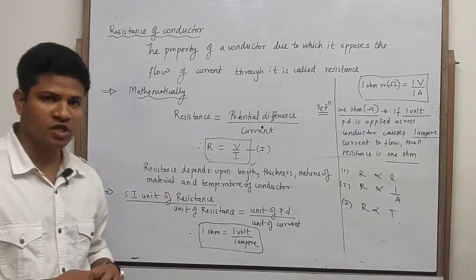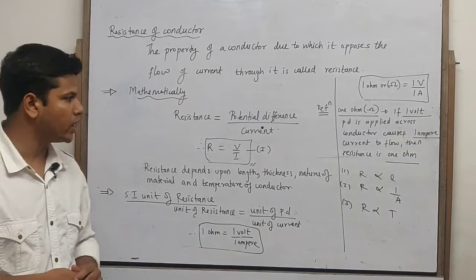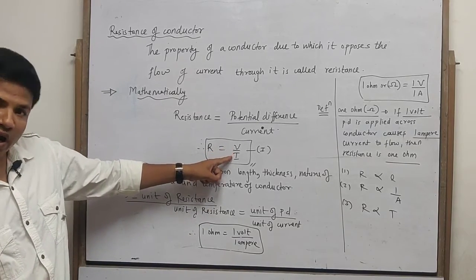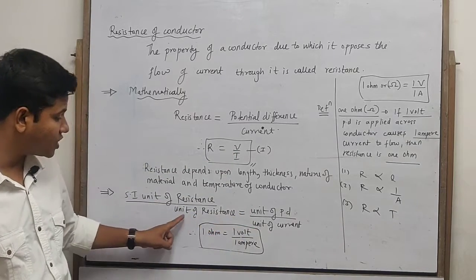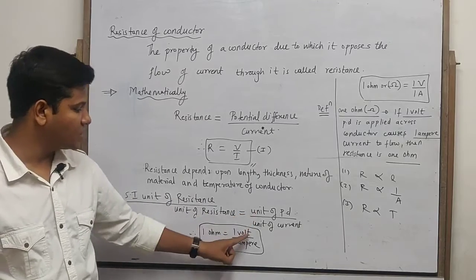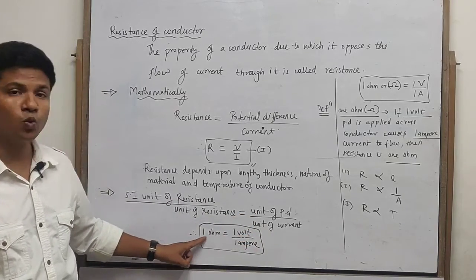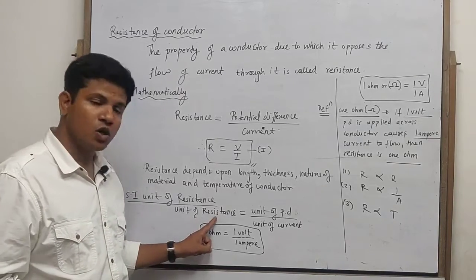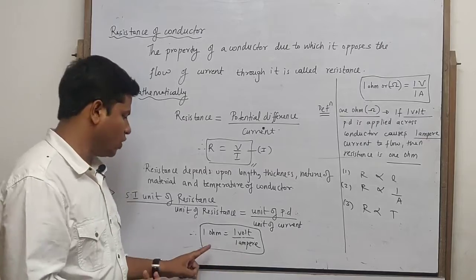The SI unit of resistance is the SI unit of potential difference upon SI unit of current. The SI unit of potential difference is volt and current is ampere. So volt per ampere is the SI unit of resistance.